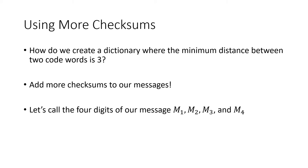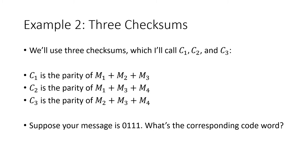To help us understand how these additional checksums work, I'm going to give names to the digits of our message: m1, m2, m3, and m4 — m for message, numbered 1 through 4. Here's one way to create these distance-three dictionaries. We're going to have three checksums: c1, c2, and c3. c1 is the parity of m1 plus m2 plus m3; c2 is the parity of m1 plus m3 plus m4; and c3 is the parity of m2 plus m3 plus m4.